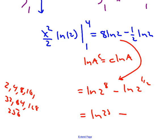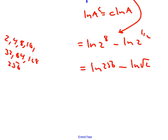So that's the ln of 256 minus the ln of the square root of 2. And then there's a rule that says minus becomes division. We'll write this way the ln of 256 over square root of 2. So that just takes care of that first integral.